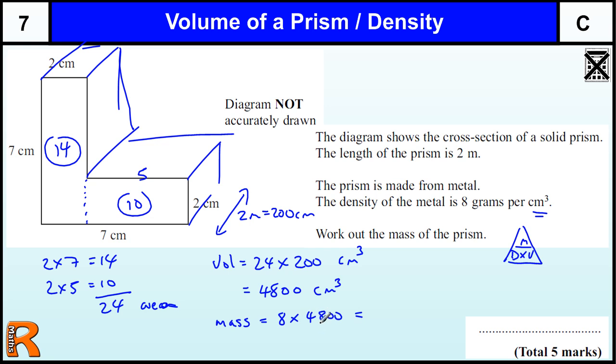So we've got to do 8 times 48. 8 times 8 is 64, carry the 6. 8 times 4 is 32, plus 6 is 38. And then the two zeros on the end, so that's the grams. So that's how many grams it is. We could say it's 38.4 kilograms, but we could leave it as that - 38,400 for five marks.